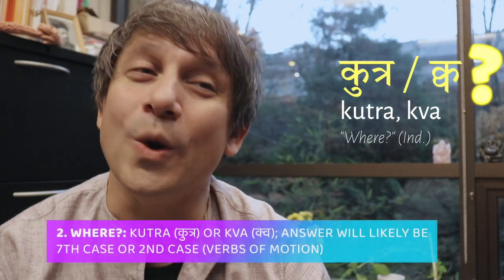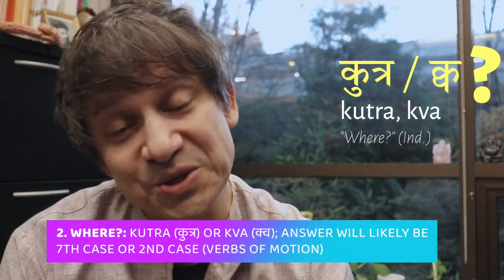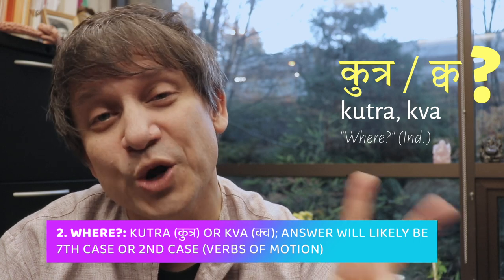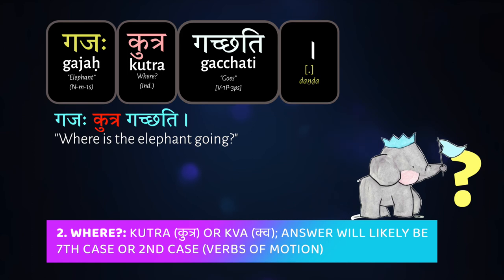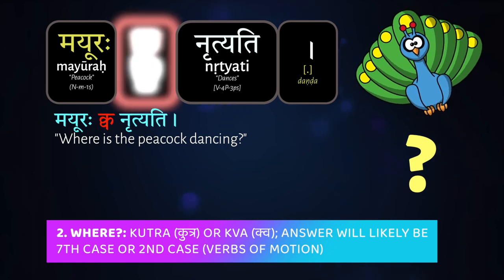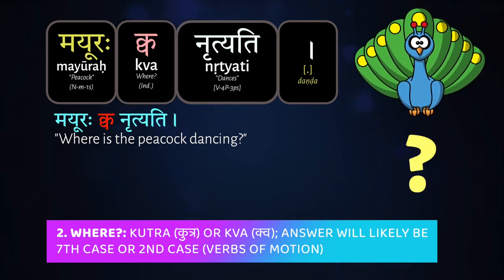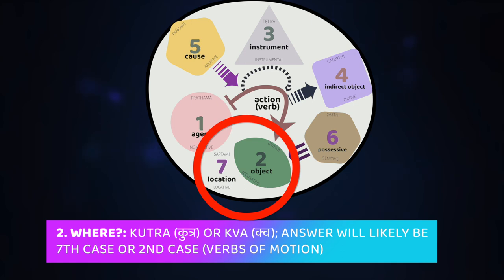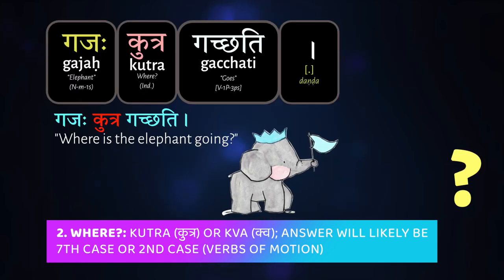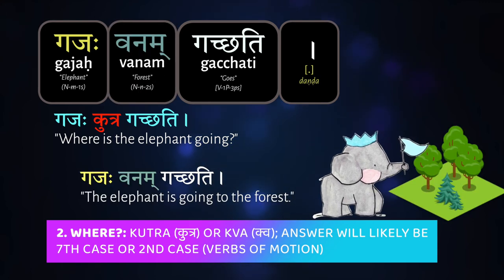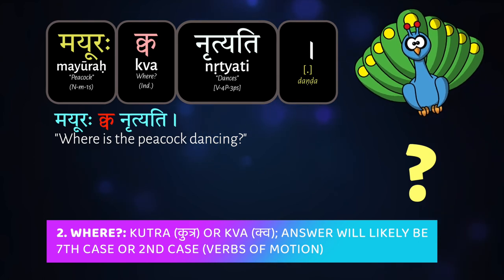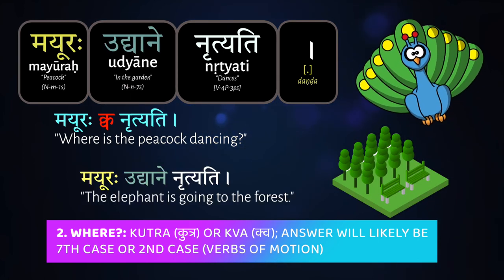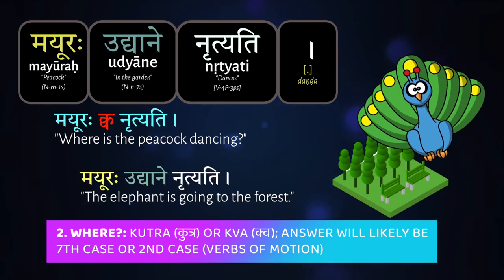To ask where something happened, there are two words you can use: kutra or kva. You can say 'Gajaḥ kutra gacchati' — where is the elephant going? 'Mayūraḥ kva nṛtyati' — where is the peacock dancing? The answer is likely going to be in an accusative or locative case. 'Gajaḥ vanam gacchati' — the elephant is going to the forest. 'Mayūraḥ udyāne nṛtyati' — the peacock is dancing in the garden.